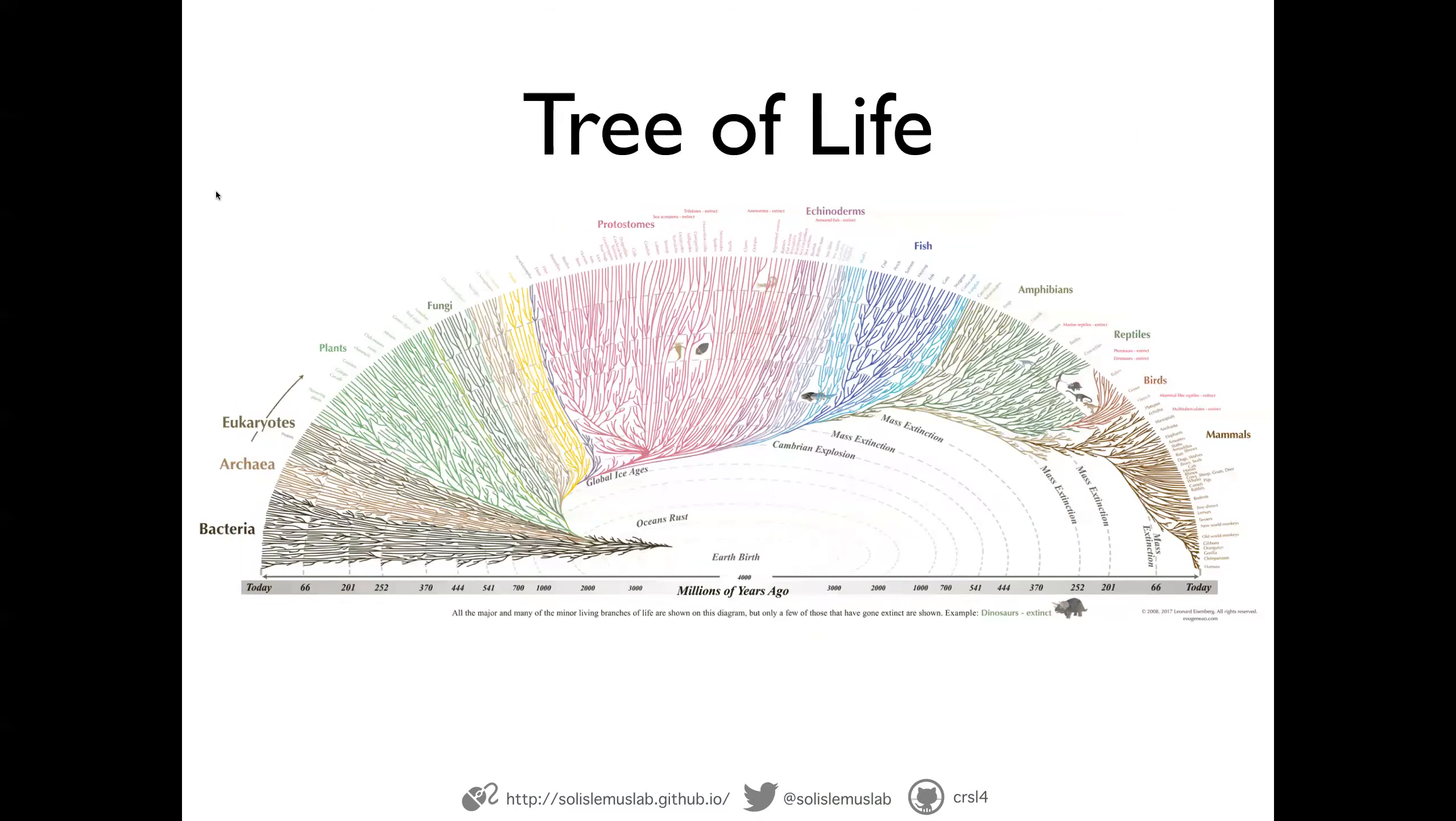And it turns out that we know this because we have reconstructed what we call the tree of life, which is this massive graphical structure that represents the evolutionary process from the origin of life that is represented by the root of the tree into the huge diversity that we see today that is represented by the leaves of this tree.